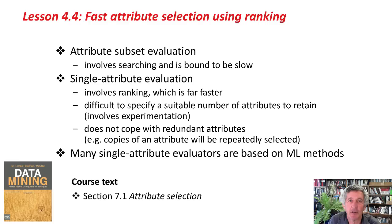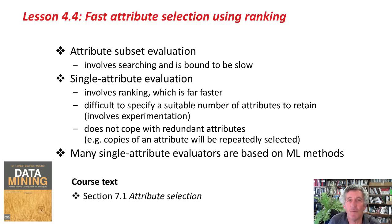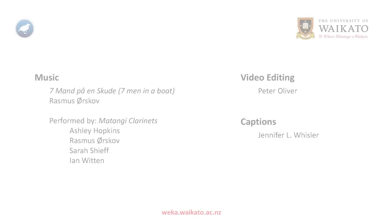The activity associated with this lesson is really worth doing because it gives you a remarkable result. It uses this attribute selection method on a document classification system and gets stunningly good results with just two attributes. I was very surprised when I set up this activity to see how well you could do using this method. So please go ahead and do that — you'll be surprised and impressed. We'll see you in the next lesson. Bye for now!